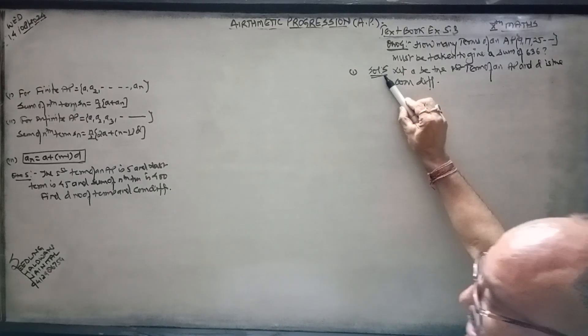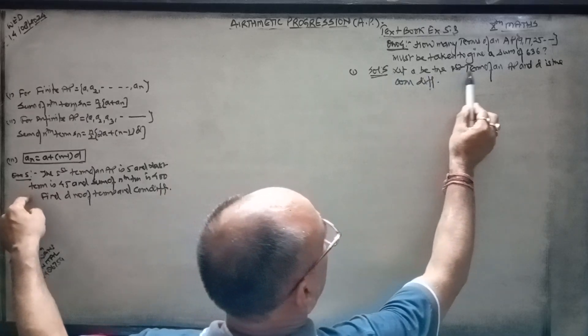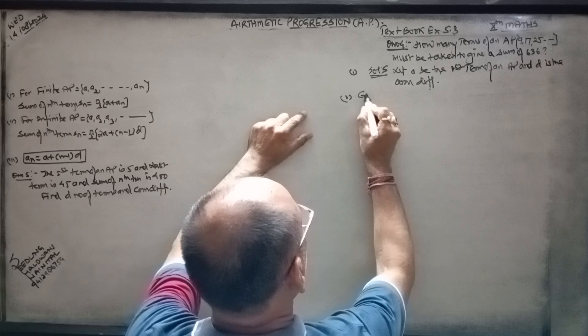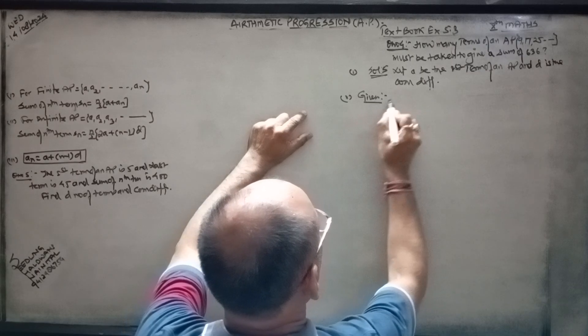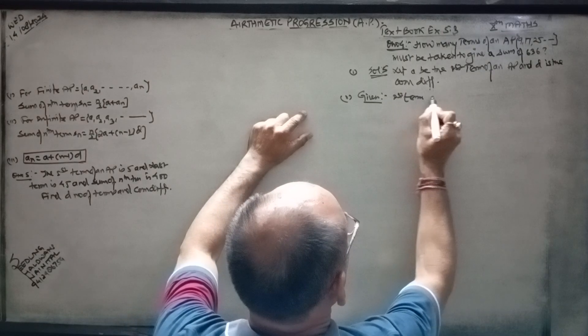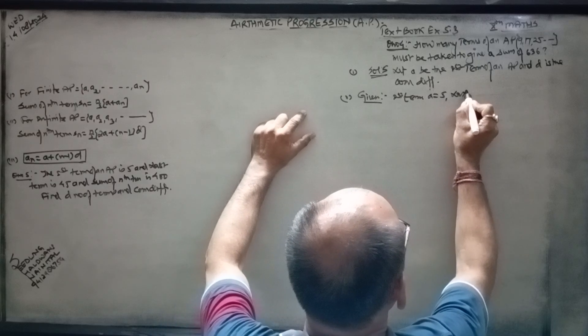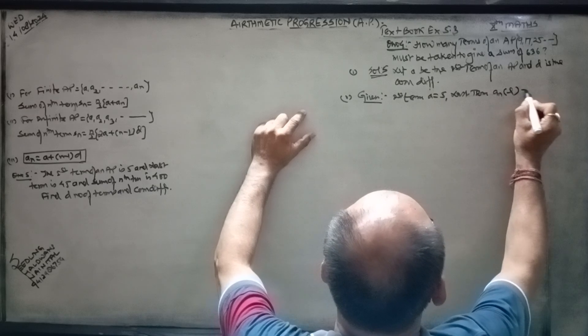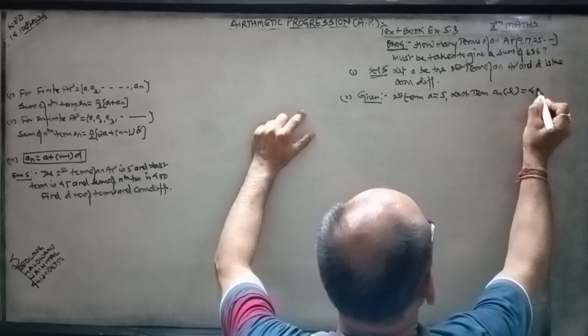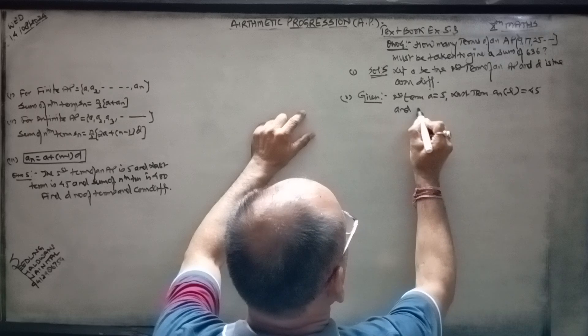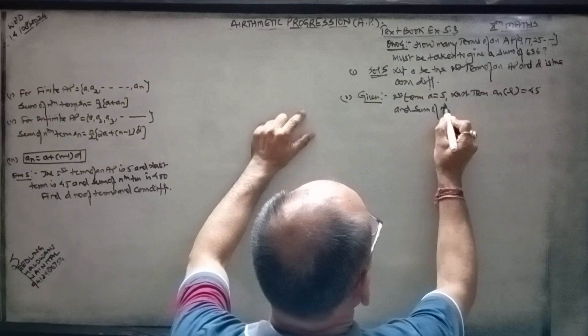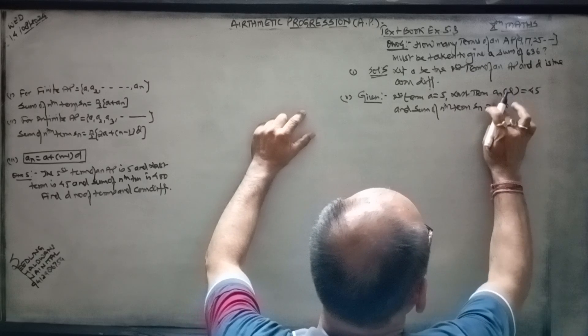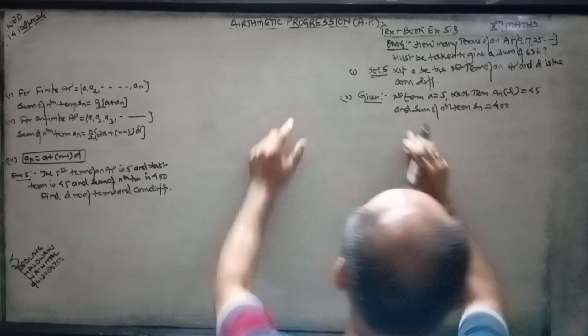So let small a be the first term of an AP and d be the common difference. Now look at the given terms: the last term of an AP is equal to 45, and the sum of nth term Sn is equal to 400.